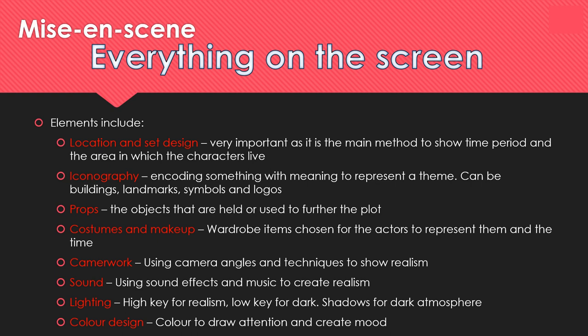Often the things that allow a genre to be dictated and codes and conventions to be met are called mise-en-scene elements. Mise-en-scene basically means everything you see on the screen. Examples include location, iconography, props, costumes, camera work, sound, lighting, and colour design. Each of those will be used to make some sort of effect on the audience. Location can help show the time period and area. Iconography uses symbolic codes. Props are objects held or used to further the plot. Costumes can dictate the time period, area, and characters. You can also have stereotypes dictated by props and costumes — for example, smart suits suggesting an authority figure.